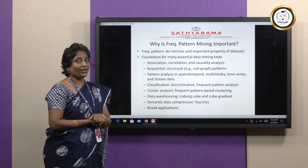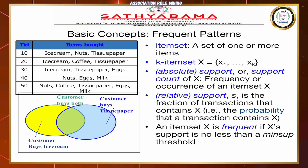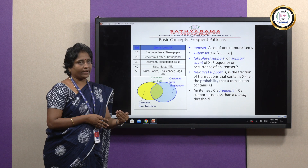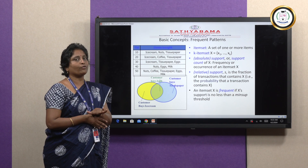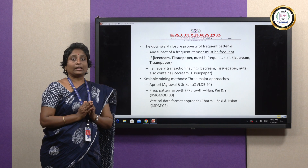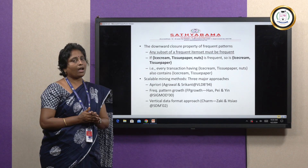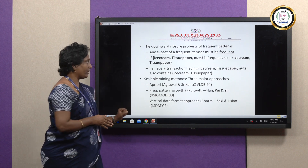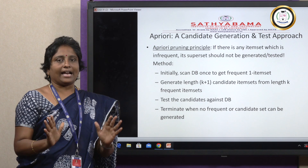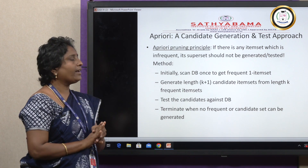For frequent pattern mining, we first find the item set, then construct the support count and confidence, and evaluate with those two metrics. There are three types of frequent pattern mining algorithms: pattern mining with candidate generation, called the Apriori algorithm; without candidate generation, called FP-growth; and the vertical data format approach. Today we are going to see only the Apriori algorithm.